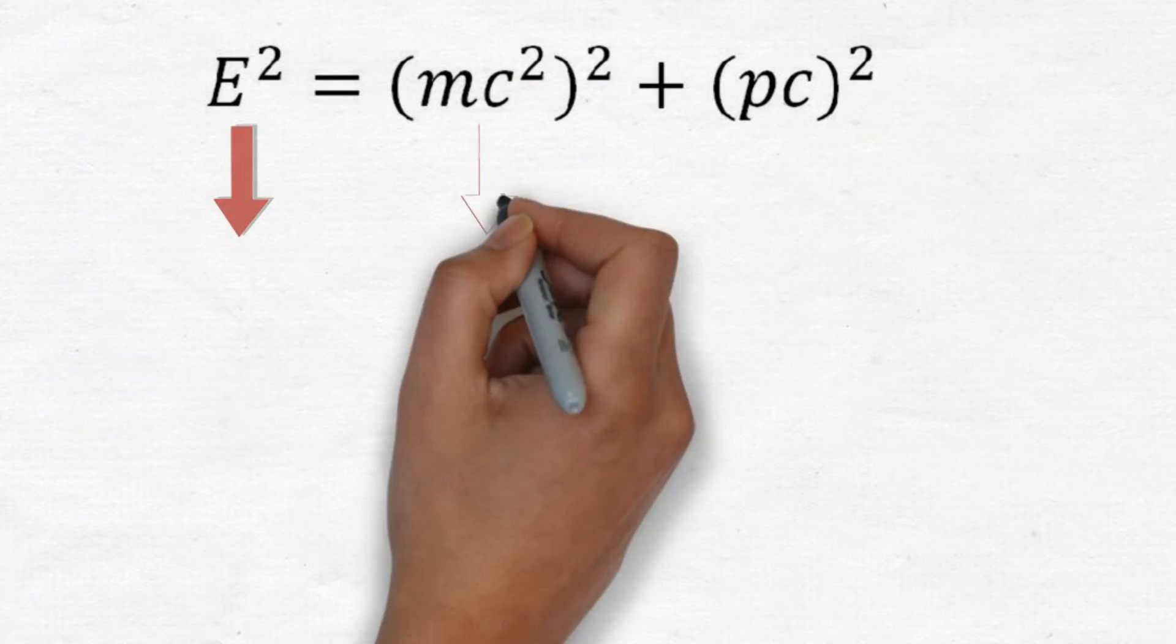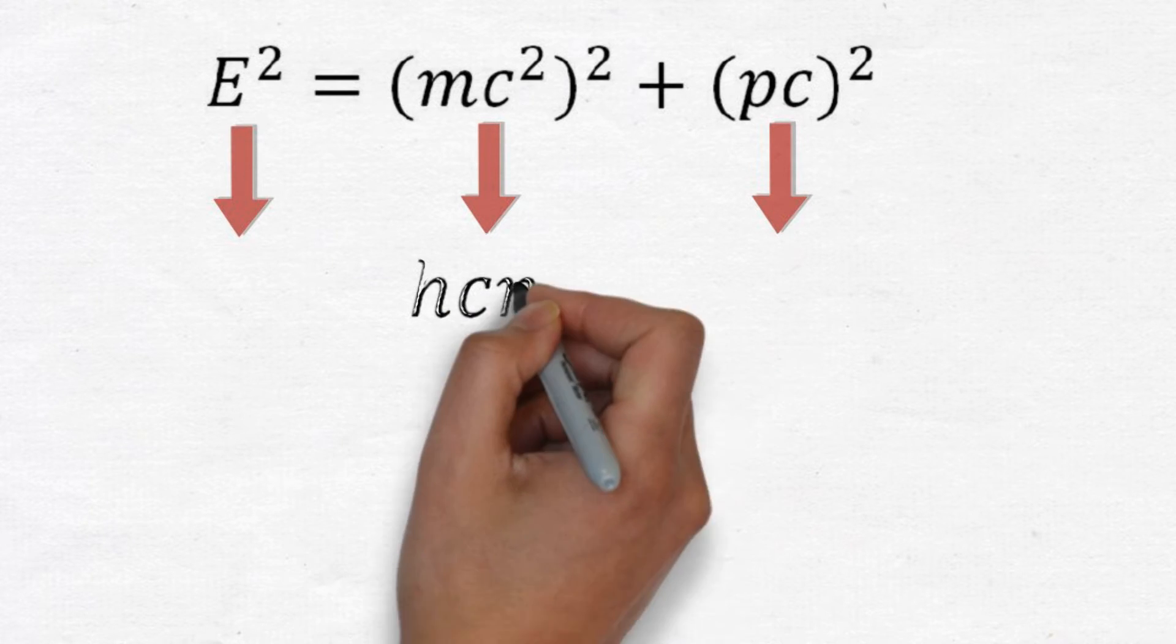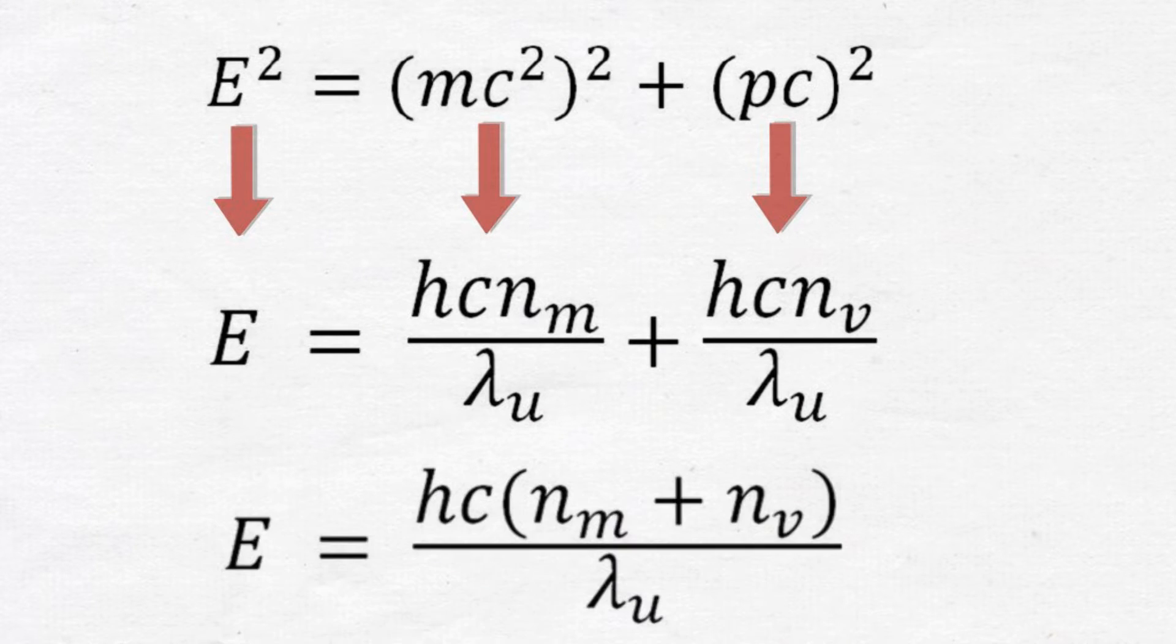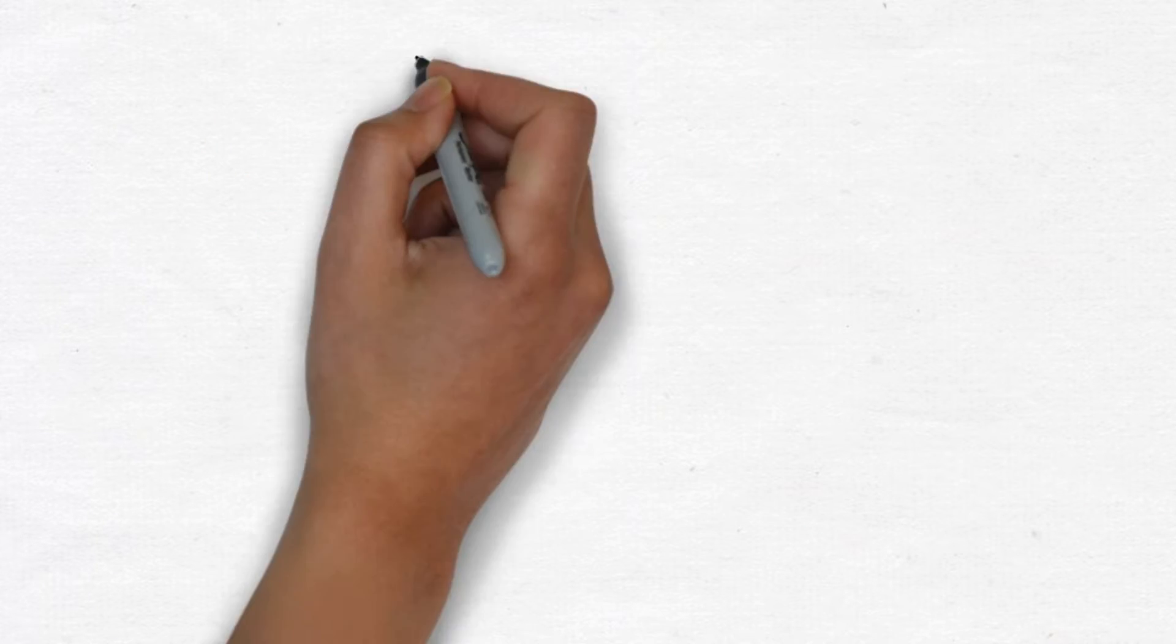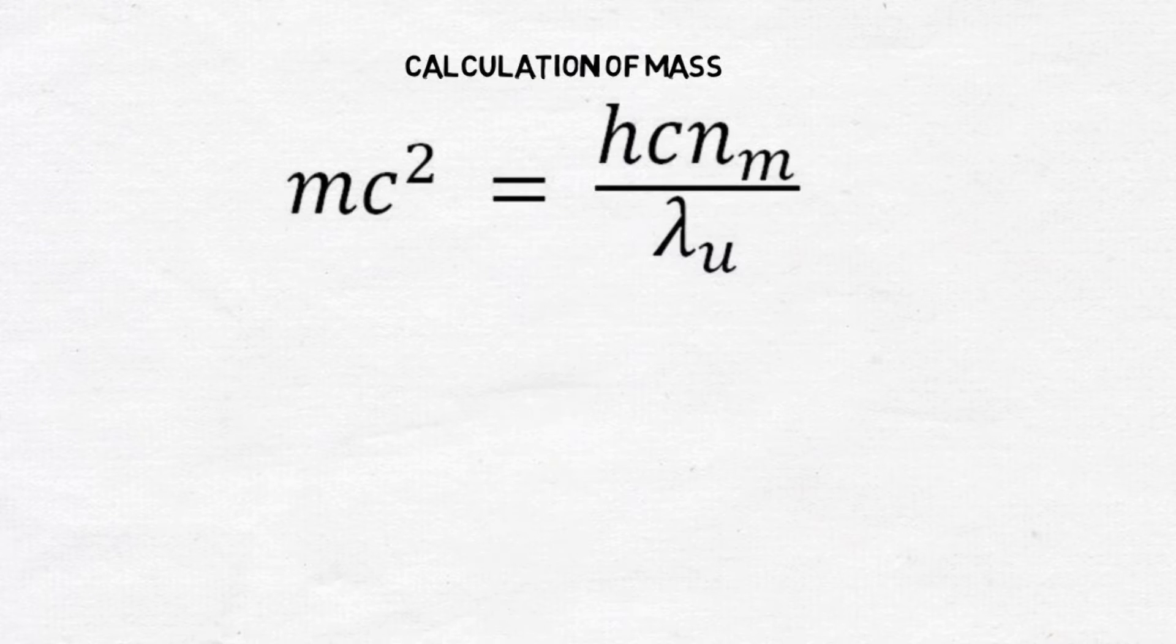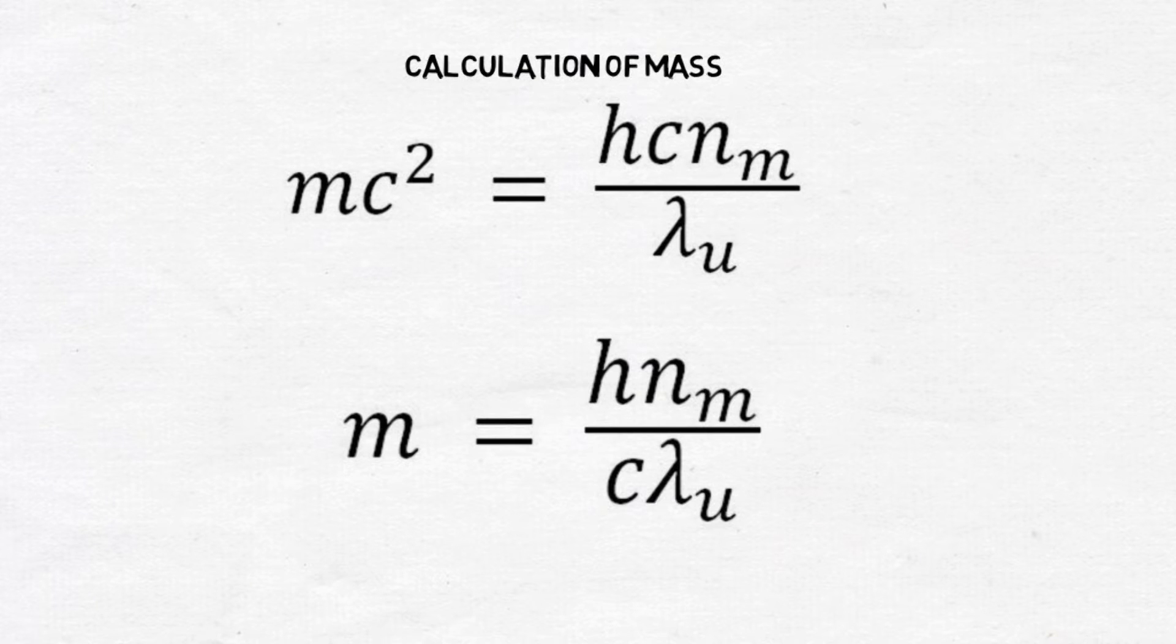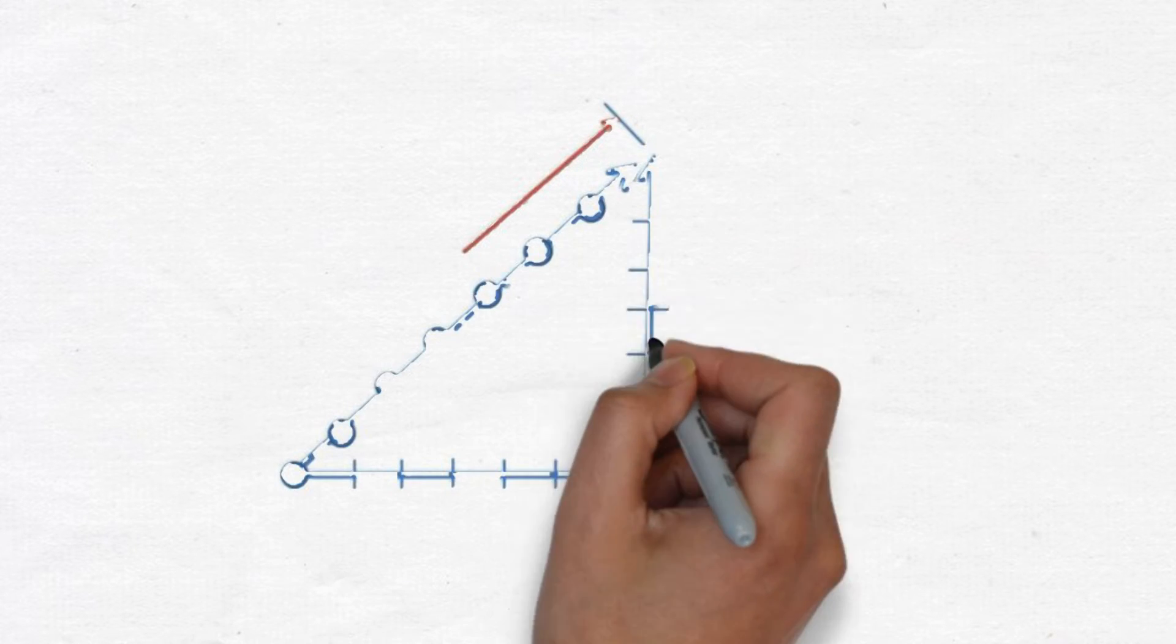In order to integrate our quantized Planck's law equation into Einstein's energy momentum equation, we can simply break our energy string into two parts. We can apply some of our energy units to the formation of mass, denoted by nm, and some of our energy units to the formation of momentum, denoted by nv. Setting Einstein's rest mass term to the first term in this equation, we can calculate mass in terms of our new energy units.